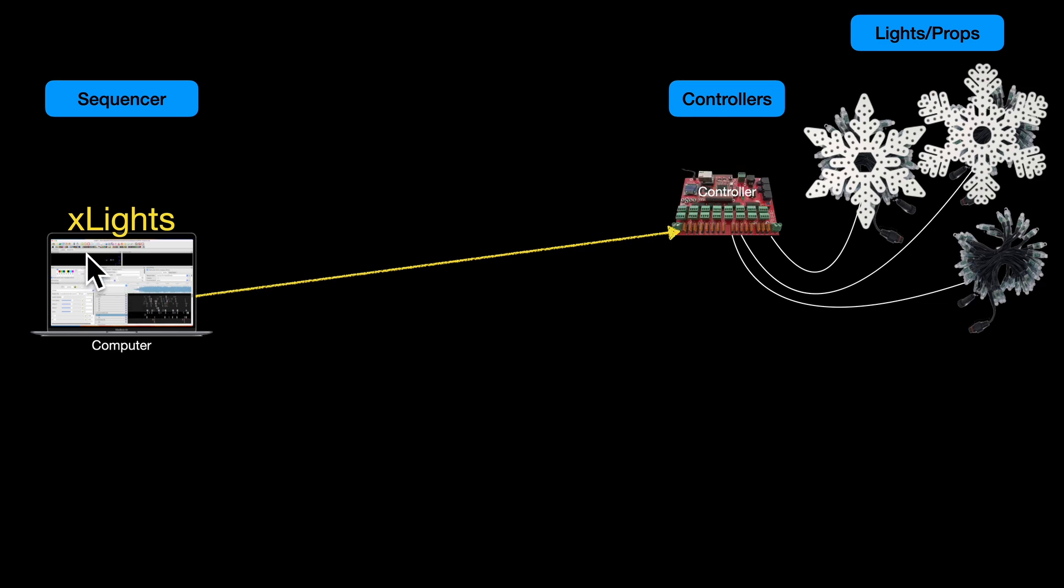You need the controllers to actually convert the information coming from the computer. Basically it comes over your internal network, there's ethernet packets to a controller. The controller has a number of ports, this one has 16 ports, and each port can be connected to a number of props.